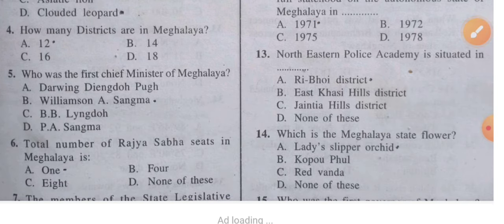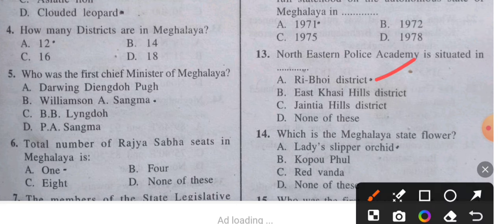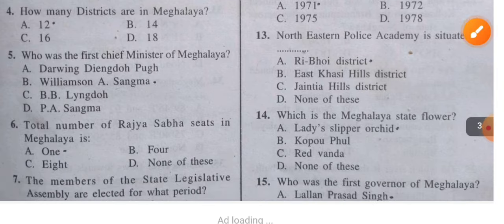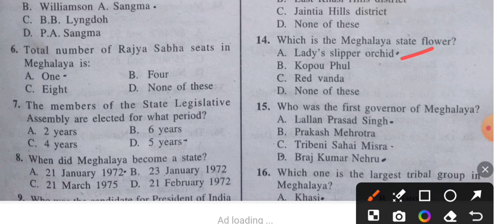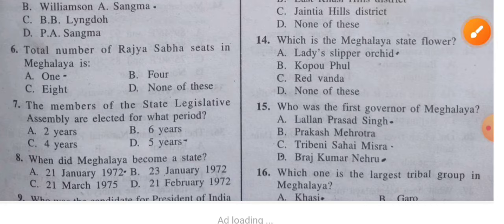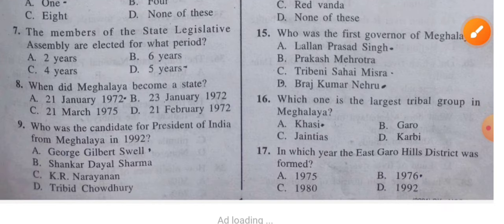Question 13: The Northeastern Police Academy is situated where? The answer is Ri-Bhoi district. Question 14: Which is the Meghalaya state flower? The answer is the Lady's Slipper Orchid.